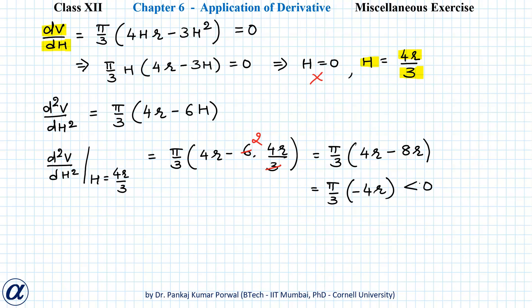And this is less than 0, so we have maximum at H = 4r/3.